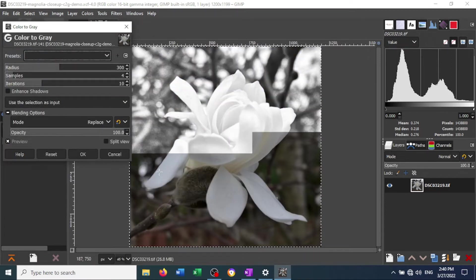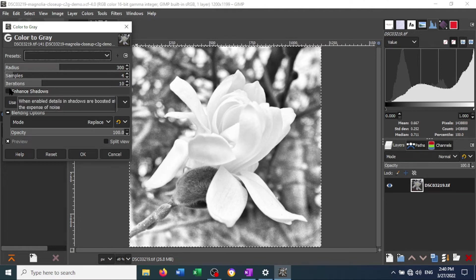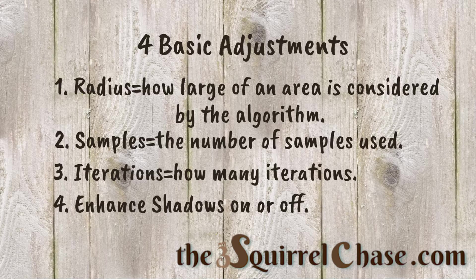This tool has four adjustments that you can make. The first is the radius, or the amount of range around the pixel that they use for calculating the gray values. The second is the number of samples that they take. The third is the iterations. And the fourth is a toggle to turn on or off the Enhanced Shadows algorithm. With all of these adjustments, a higher value means that the image will be more refined, and as a result will take a longer processing time.